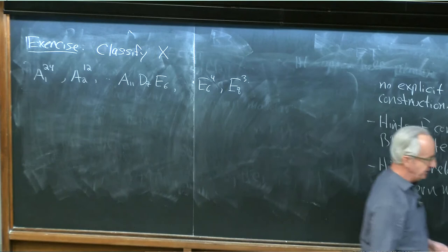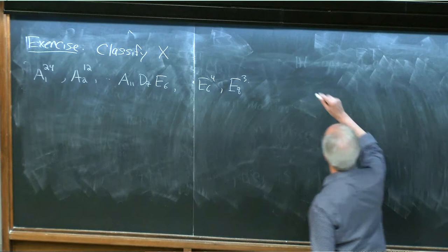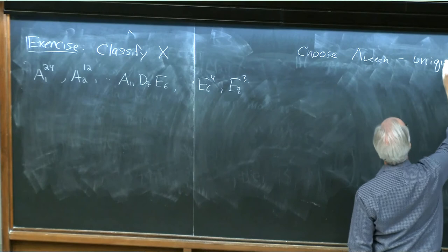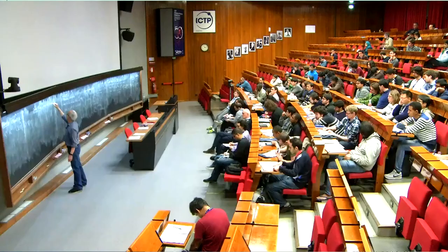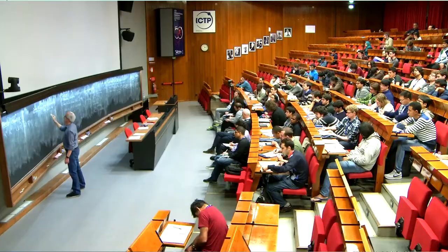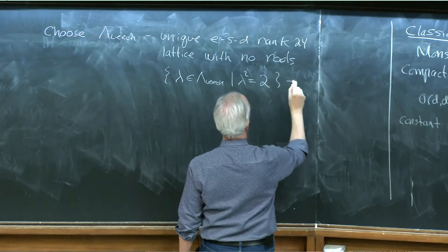These things will appear later. But for right now I want to consider a compactification where we don't choose any of these but we choose the Leech lattice — the unique even self-dual rank 24 lattice with no roots, meaning that the set of elements in the Leech lattice with length squared 2 is the empty set. There are no points of length squared 2; instead the shortest vectors have length squared 4.